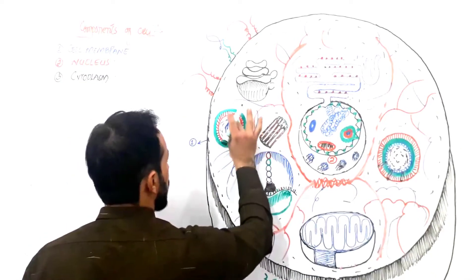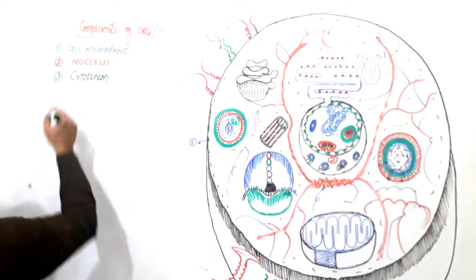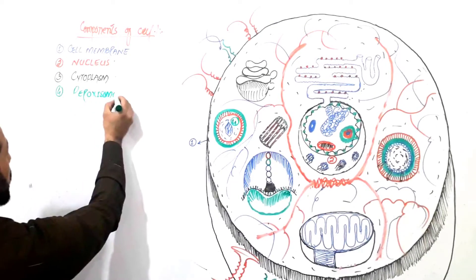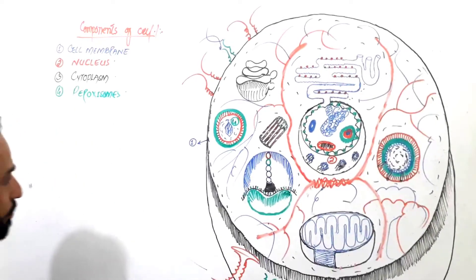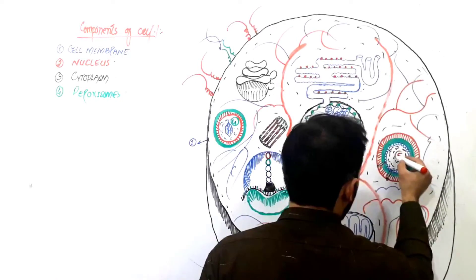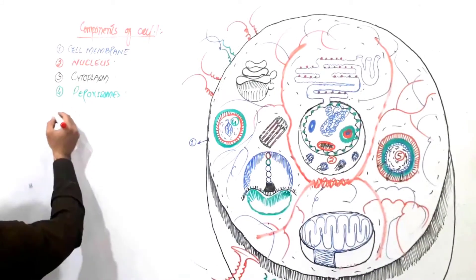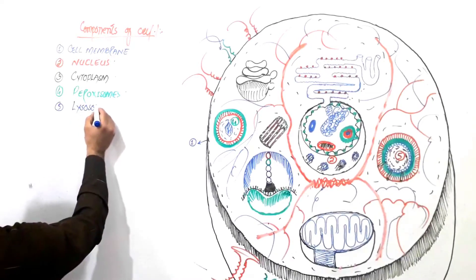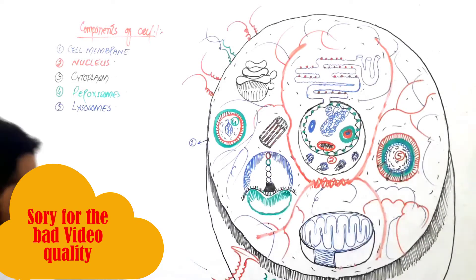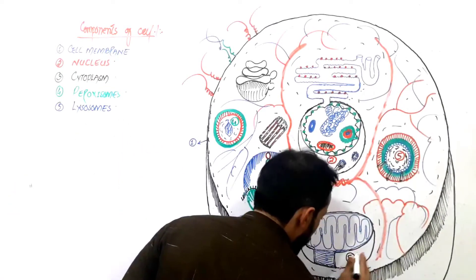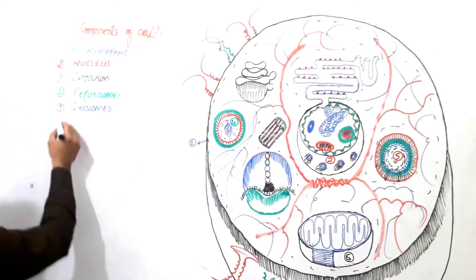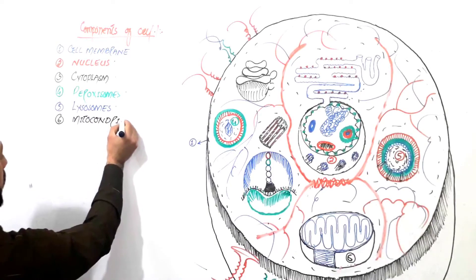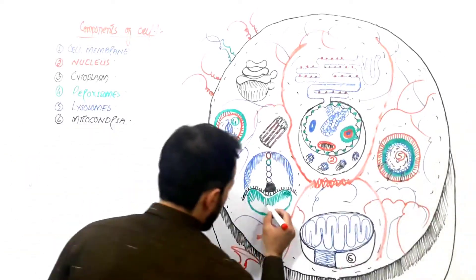The fourth part of the cell is the peroxisome. The fifth part is the lysosome. Then the sixth organelle in the cell is the mitochondria — we will have a dedicated lecture on mitochondria.